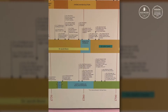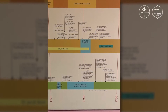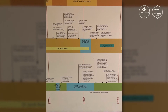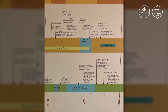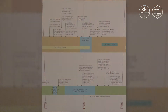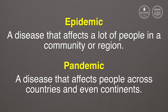This timeline shows epidemics and pandemics that have impacted those who live in Salem and beyond. Sister Karen, can you explain the difference between epidemic and pandemic? An epidemic is a disease that affects lots of people in a community or a region, and a pandemic is a disease that affects lots of people across countries and even continents.